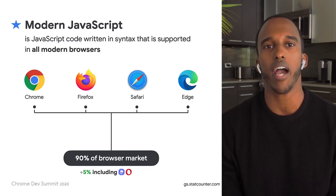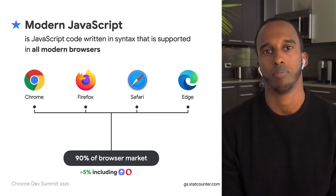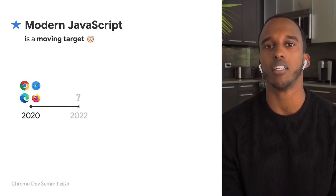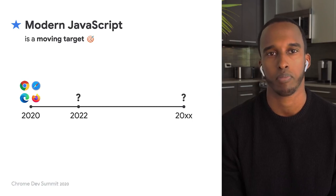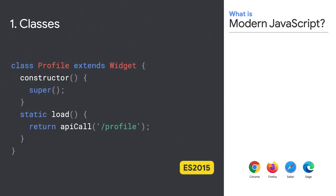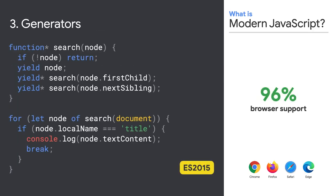That means 95% of visitors to your site are using a fast modern browser. The browsers that make up the majority market share are also evergreen, which means they get new JavaScript features over time. But how do we write or generate code for a moving target? The easiest way is to look at features already widely supported. First up, classes, which have over 95% browser support. Arrow functions, 96%. Generators also have 96% browser support.